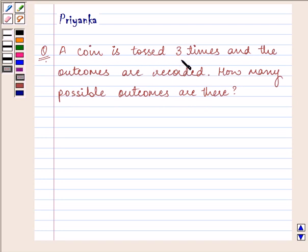It is saying a coin is tossed three times. Now we know that when we toss a coin there are two possible outcomes.